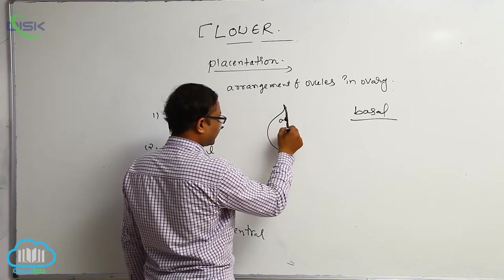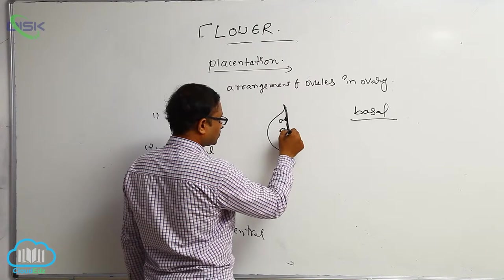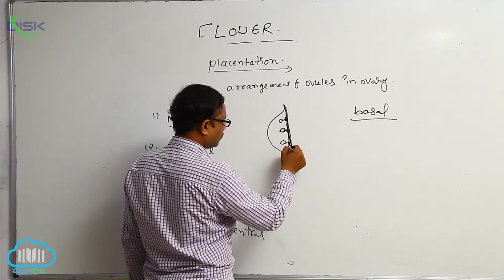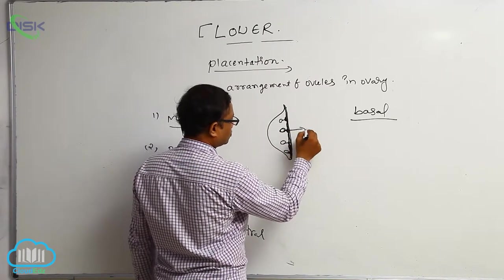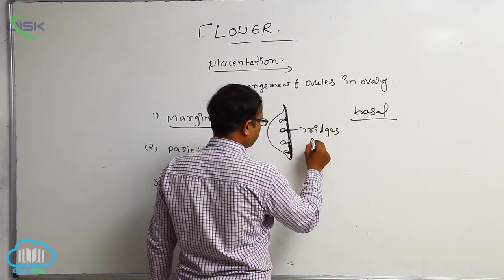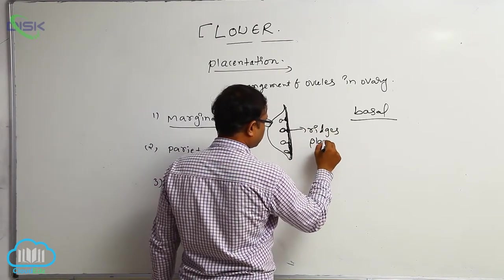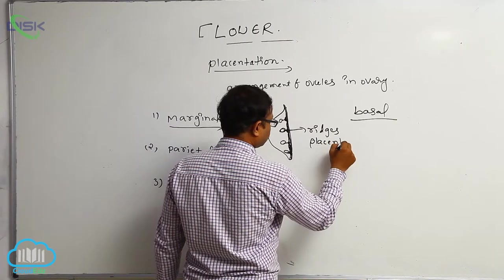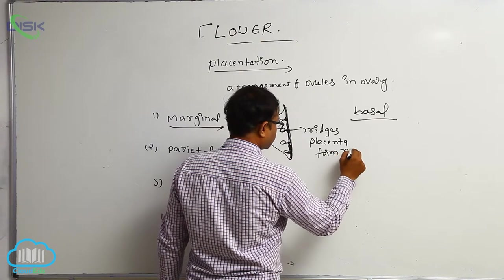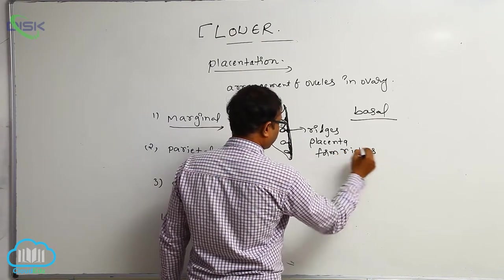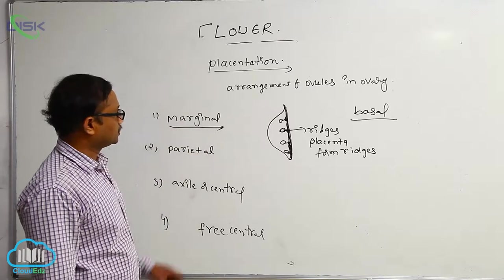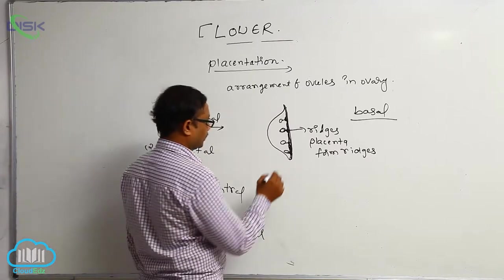The placenta forms ridges, which is a previous exam question. Ovules are connected to these ridges at the ventral side of the ovary. That is known as marginal placentation.